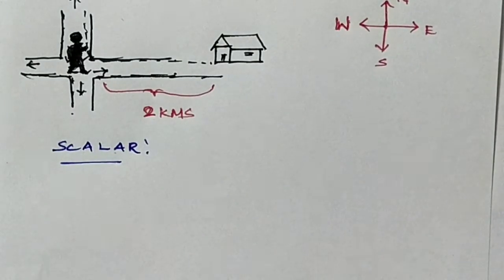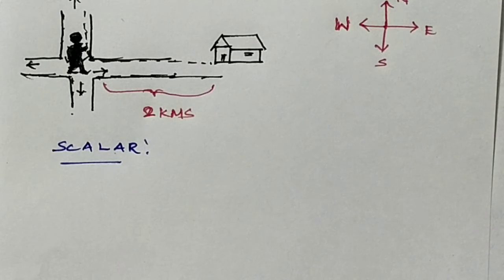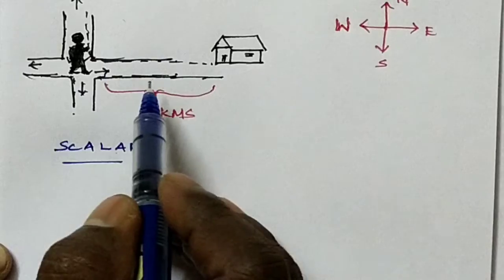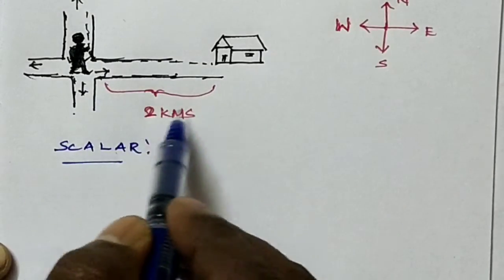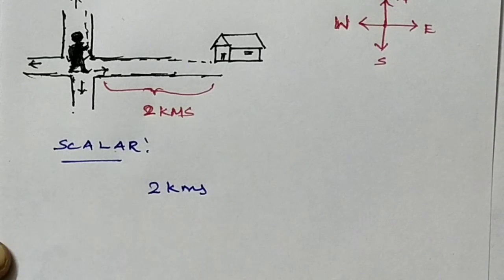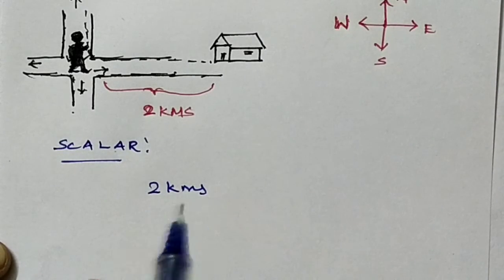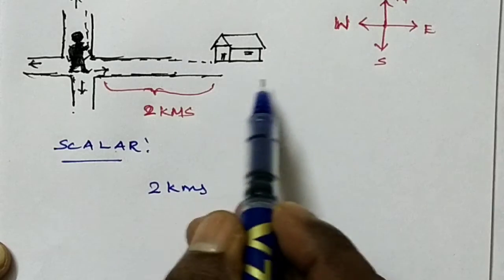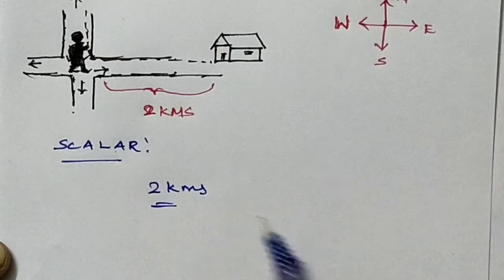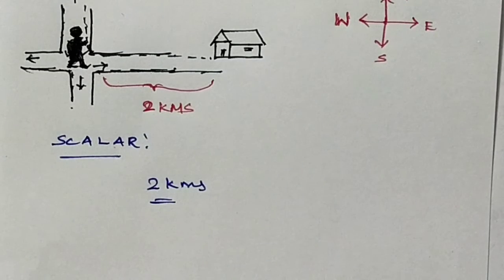Scalar means it is a property which can be expressed only by the magnitude. In physics, a number of quantities can be described by scalars. For example, this person moving to cover a distance of two kilometers — that distance is a scalar quantity.